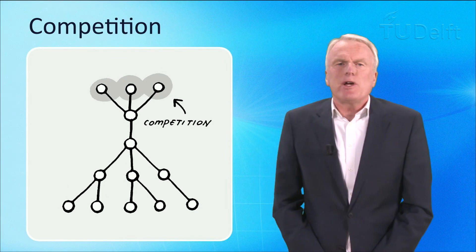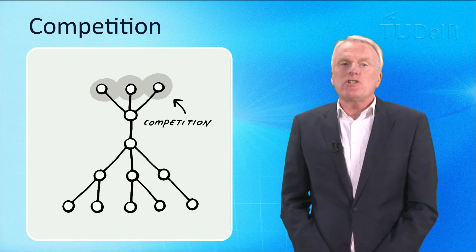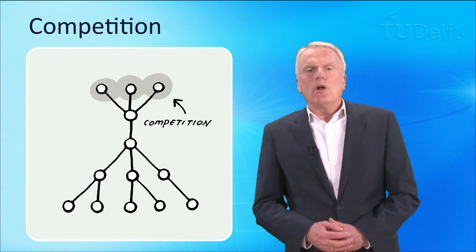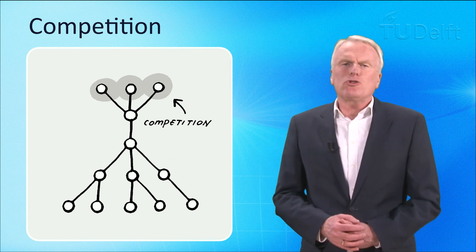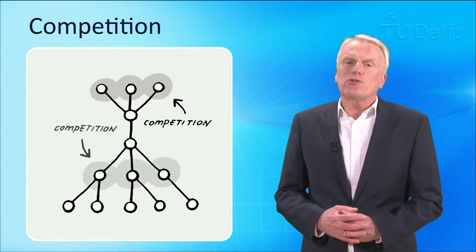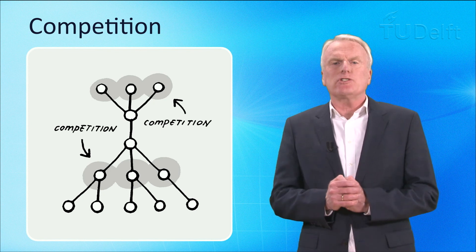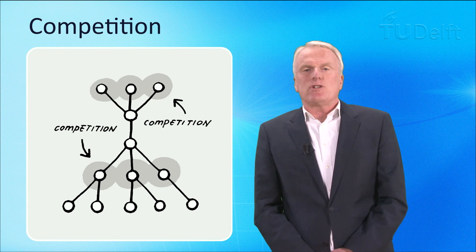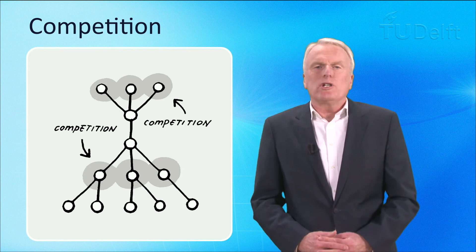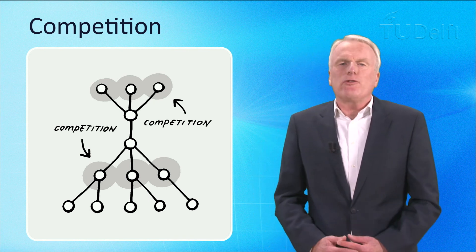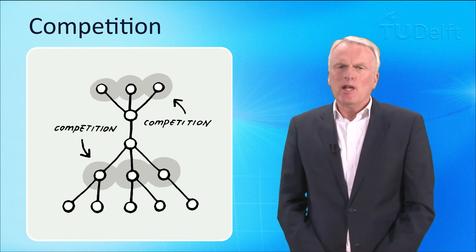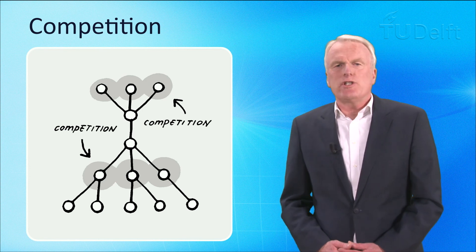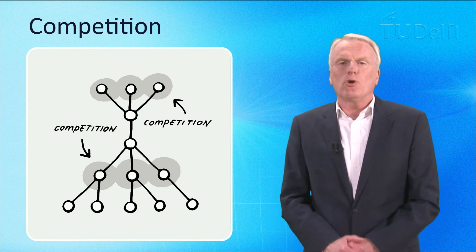After unbundling it may turn out that competition is indeed possible in a number of links in the production chain. For example, competition is often possible at the level of services provided over the infrastructure, however, in practice the number of competitors remains limited, with duopolies or oligopolies being frequently occurring market forms. Nevertheless, the number of players is increasing compared to the monopoloid configuration.